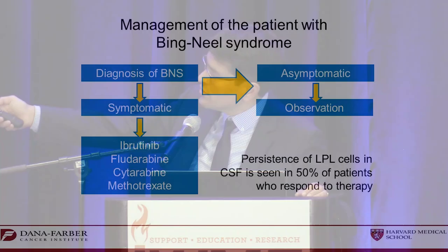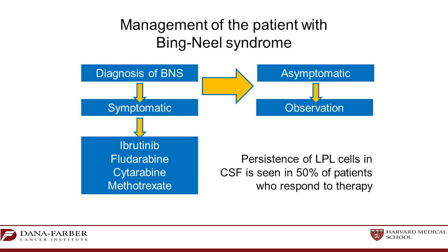For patients with a Bing-Neel diagnosis who are asymptomatic, we watch closely. For symptomatic patients, ibrutinib could become first-line treatment before exposing them to more toxic agents. What we have also observed is that even when patients feel better and MRIs improve, some malignant cells may persist in the spinal fluid without causing much harm — very much like Waldenström's itself, where we don't cure the disease but manage it. The significance of persistent cells in the spinal fluid is not fully understood yet.